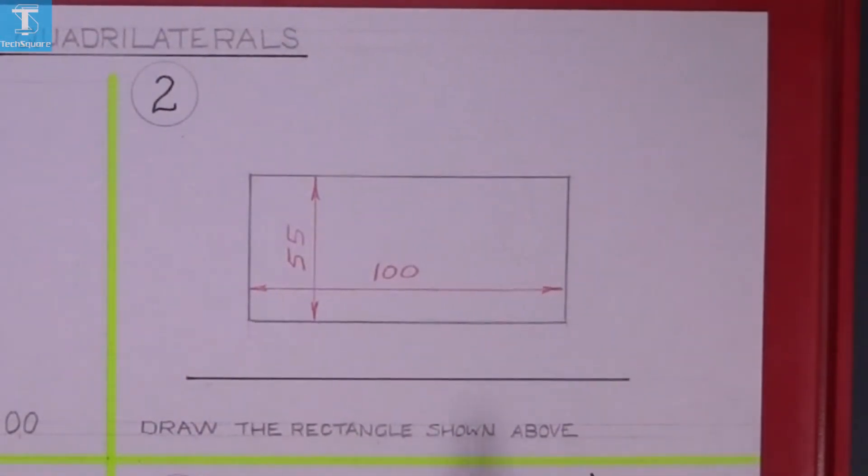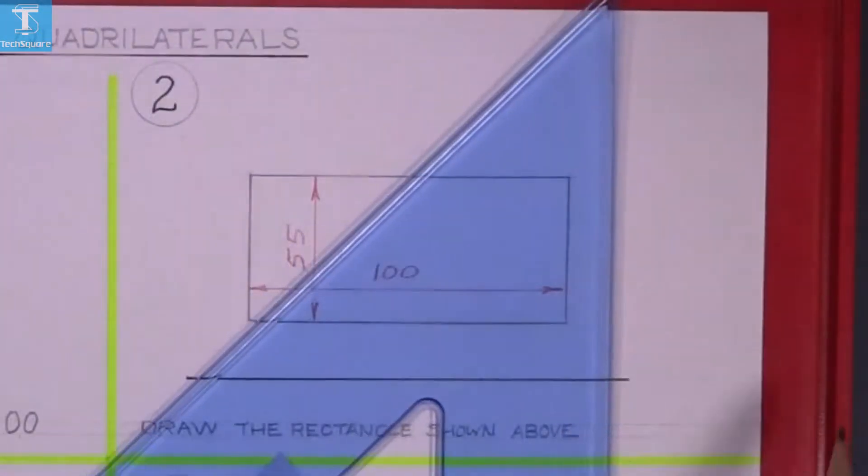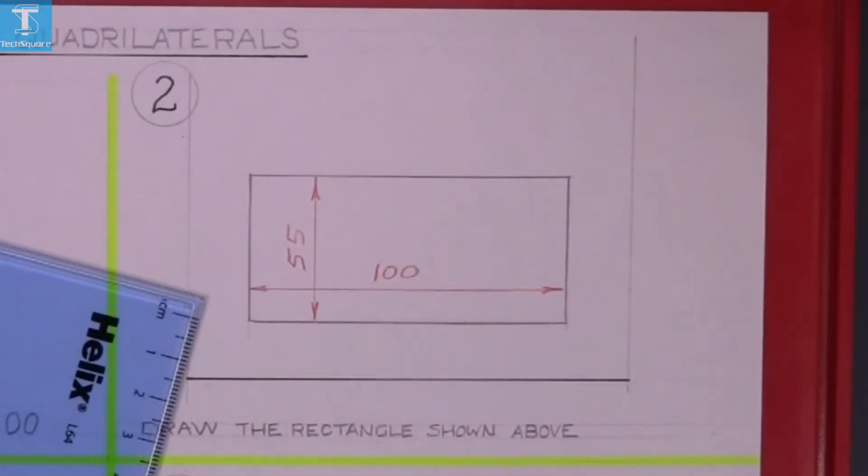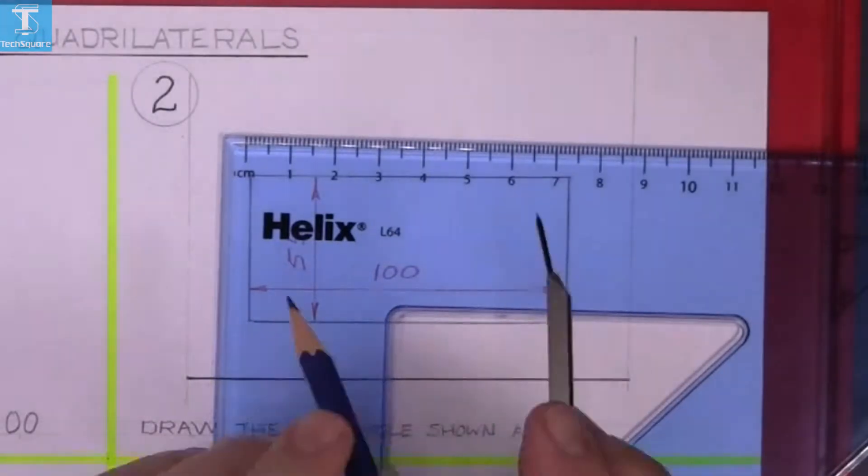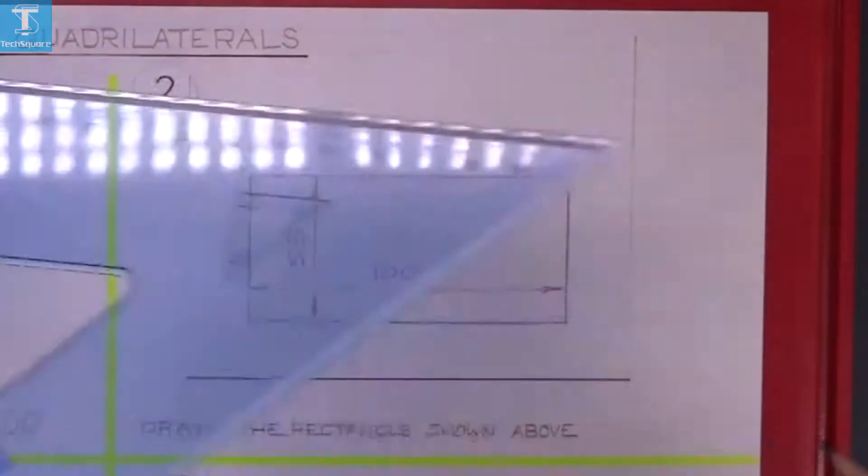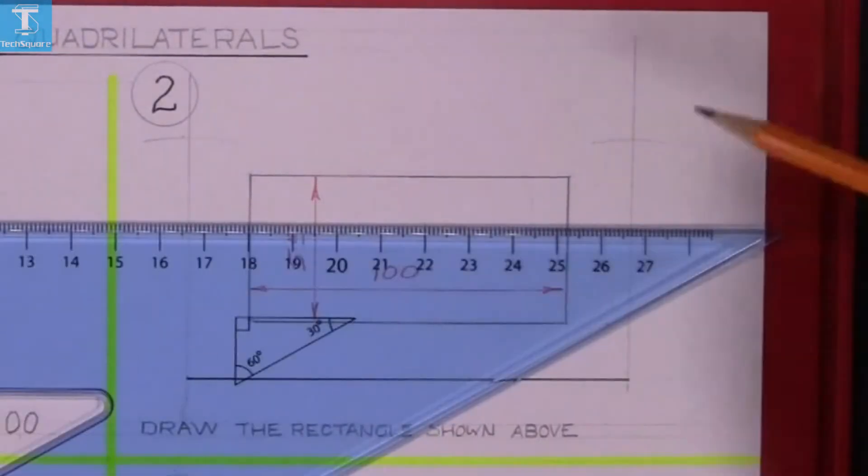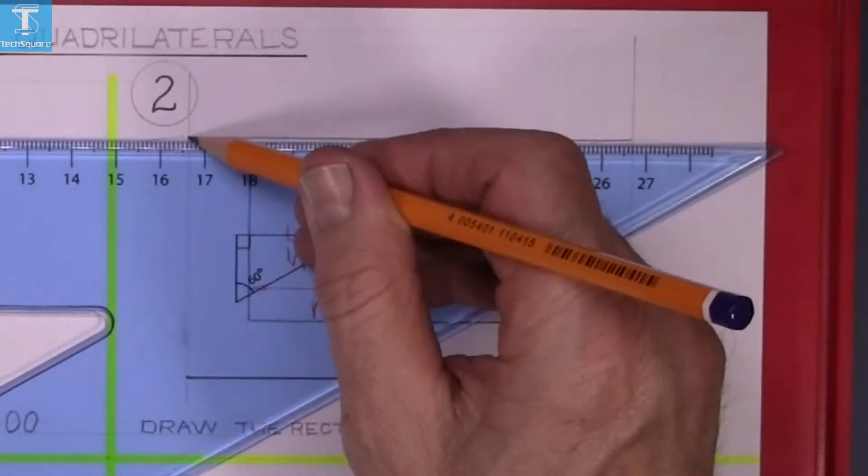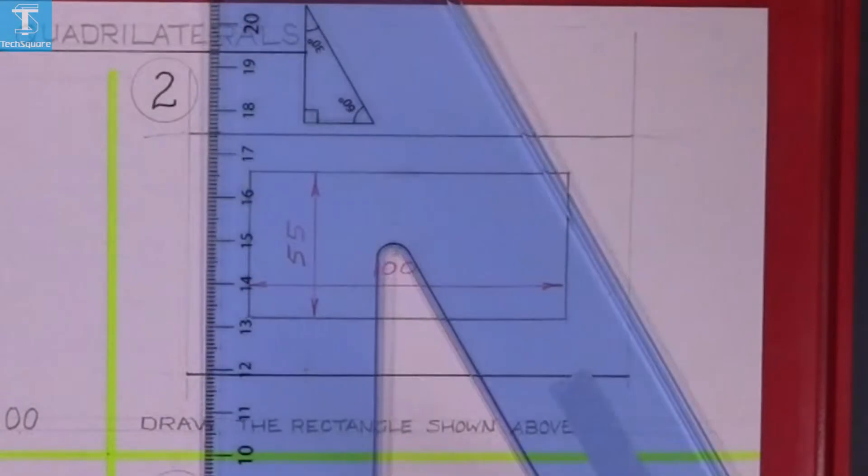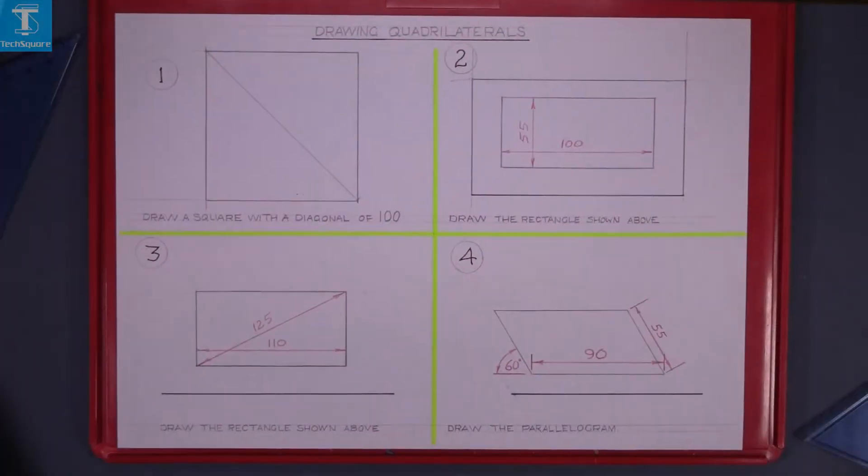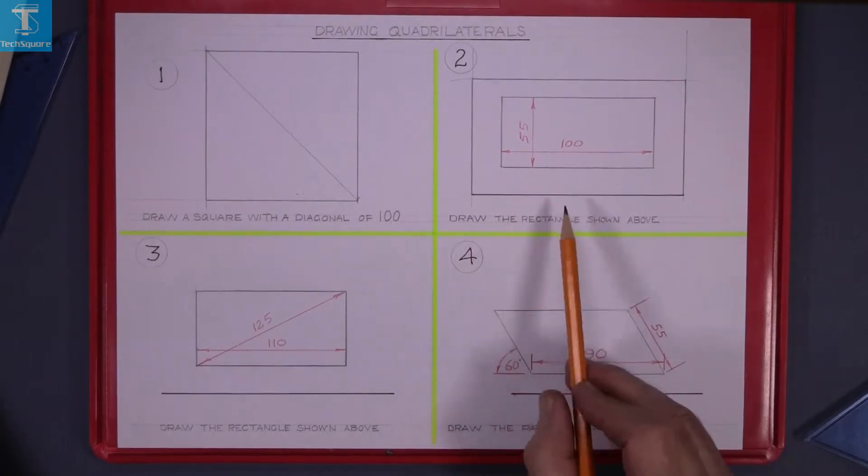So the first thing we do is we draw the two vertical lines through the end of the base. Set off the height using the compass, mark the length on both ends and draw a horizontal line through those two points. And that gives the rectangle that was required.